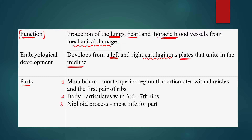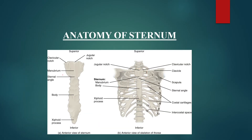The sternum has three different parts: first is the manubrium, second is the body, and third is the xiphoid process. The manubrium is the most superior region and articulates with the clavicle — the S-shaped collar bone — and the first pair of ribs. The body articulates with the third to seventh ribs. The xiphoid process is the most inferior part and does not attach to any rib.